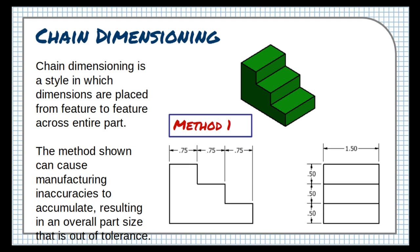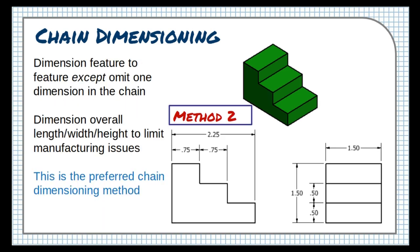When a part is dimensioned using the method shown here, the small allowable tolerance in each of the chains of the dimension would potentially accumulate, resulting in an overall length or height for the part that is much too small or too large.